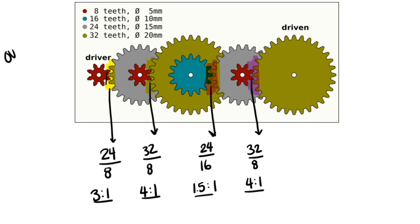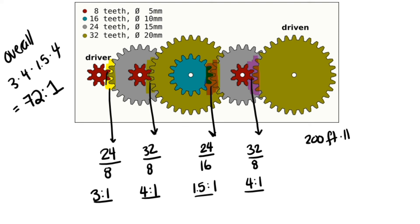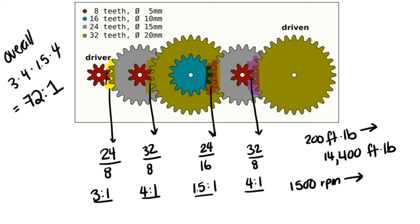The overall gear ratio is 3 times 4 times 1.5 times 4, which equals 72 to 1. With an input torque of 200 foot-pounds, the output torque is 200 times 72 equals 14,400 foot-pounds — massive torque thanks to the gear reduction. For output speed: input speed of 1,500 RPM divided by 72 gives approximately 20.8 RPM — very slow compared to the input.